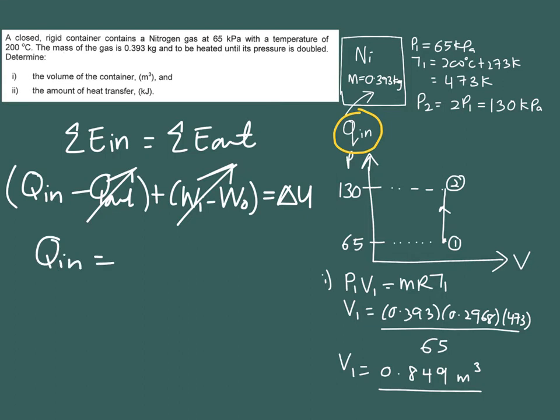Right, because this is an ideal gas so your change of U is actually m times CV times temperature at two minus your temperature one. Okay, where your CV is actually your specific heat at constant volume.